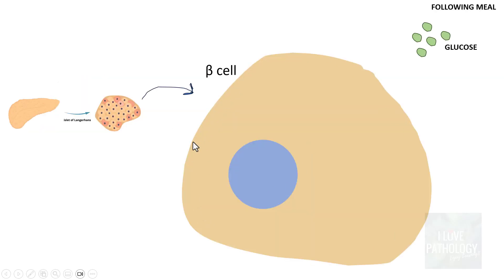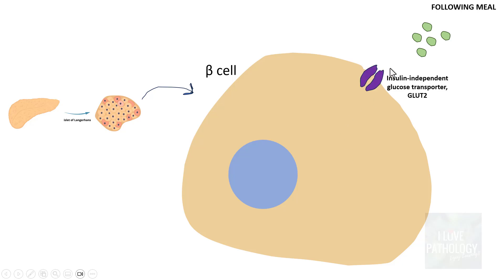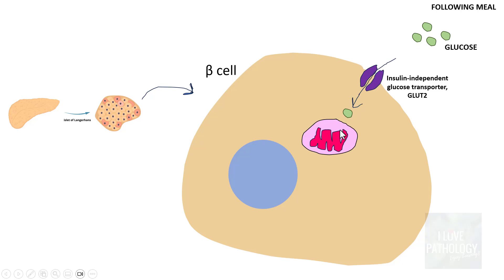This is an enlarged version of the beta cell. Once you consume a meal, the glucose from your meal is taken up by the beta cell through transporters. This is an insulin-independent glucose transporter — irrespective of insulin levels, glucose gains entry into the beta cell. Then in the mitochondria, the metabolism of glucose takes place, which results in synthesis of ATP.